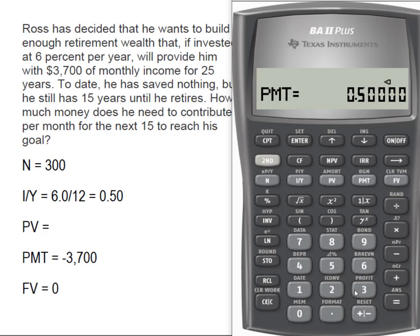We know that he wants his payments to be $3,700, and those are going to be payments that he draws out of this fund, so that's a negative. And we know that he's going to live the 25 years and draw that out to zero. So that becomes a zero future value. And now we're going to compute his present value.